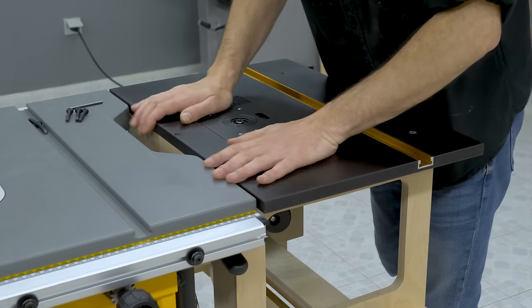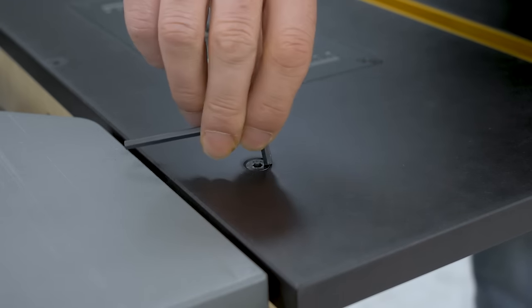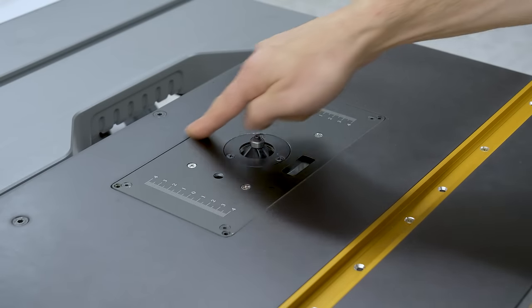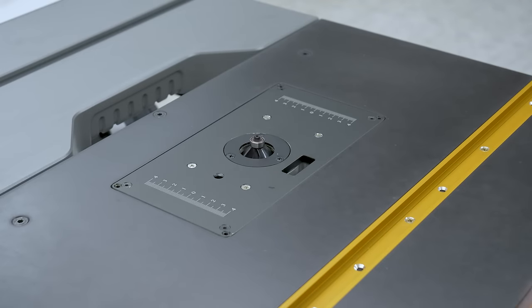To make the work table I used some black MDF I had in my workshop. We could also use standard MDF or the same plywood I used to build the rest of the cabinet. If the board has melamine or HPL on both sides, even better.